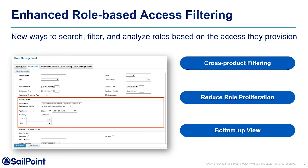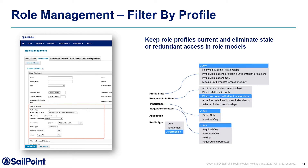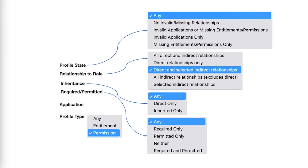The problem is that an organization's access is constantly evolving, and if your role model fails to evolve as well, it will quickly become obsolete. If your organization already has a role program or is just starting one, the newest enhancements in IdentityIQ 8.3 can help your team quickly gain new insights into role-based models with cross-product filtering, to reduce role proliferation through more granular search options, validating that entitlement profiles are unique, up-to-date, and contain only the access that is needed. In role management, you will be able to search for roles based on an entitlement and optionally view the entire role inheritance structure associated with that entitlement from the bottom-up — the entitlements up associated to those roles.